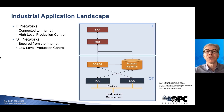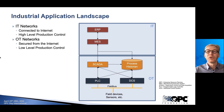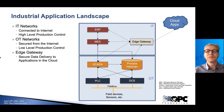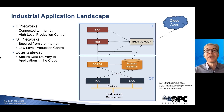We typically also have the process historians in this scenario. This OT network is typically secured from the Internet, because we don't want intruders from the Internet reaching the production control. And now we have new requirements: we want to use applications in the cloud and deliver data securely from production to the cloud. For those purposes, we've seen a group of applications called edge gateways entering the market in recent times.